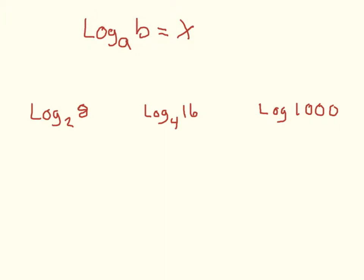When you calculate a logarithm, you'll see the word log, a small subscript base number, and a larger number. What you're finding is a value of x. When you take log base A of B, you're finding the exponent that A needs to be raised to in order to get B. So when you take the log of B with base A and get a number, that number is an exponent.